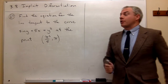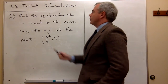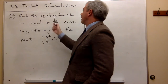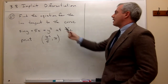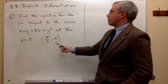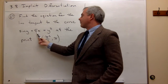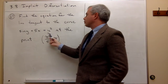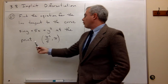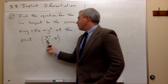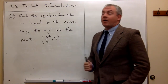Now let's take a look at problem number 27. In 27 we would like to find the equation for the line tangent to the curve sine y plus 5x equals y squared at the point pi squared over 5, pi.